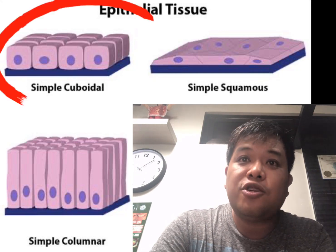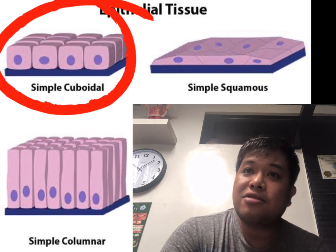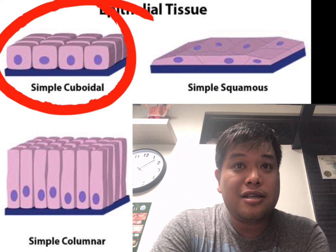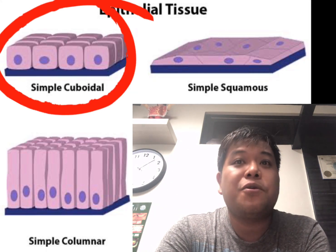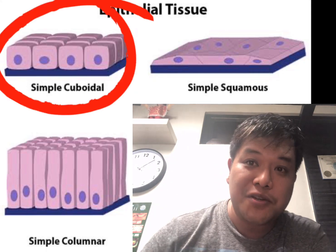The last are the cuboidal cells. They look like dice — a square shape with a large and spherical nucleus.